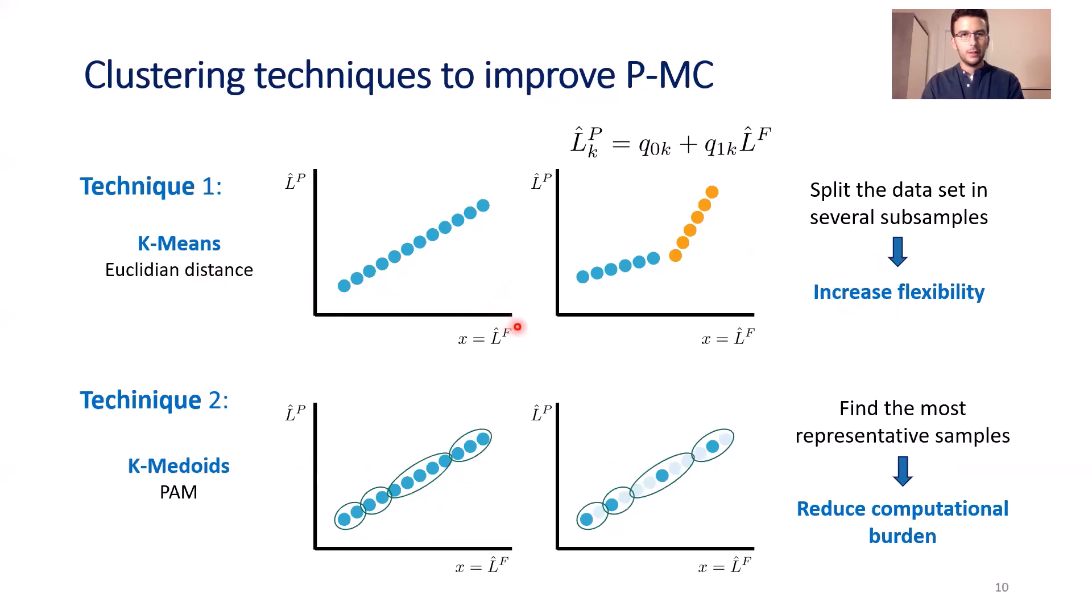Here we represent the original point forecast that minimizes the mean square error. This is the policy computed on the original dataset to produce our enhanced estimate. But leveraging K-means clustering, we can produce several clusters in which we compute different policies to increase the flexibility of our model and improve results. Another technique is to subsample the original dataset through K-means to find the most representative samples, achieving a reduction in the computational burden of the algorithm.